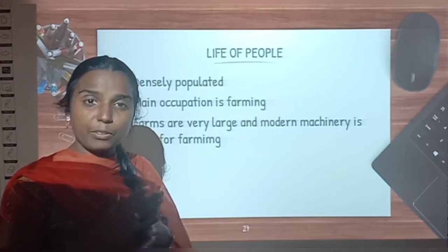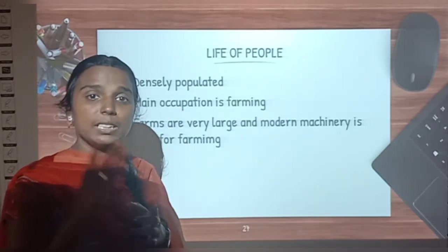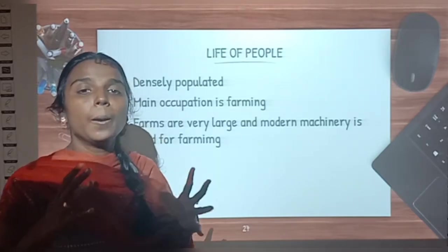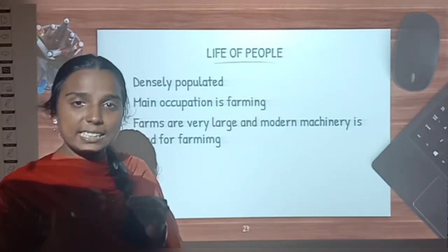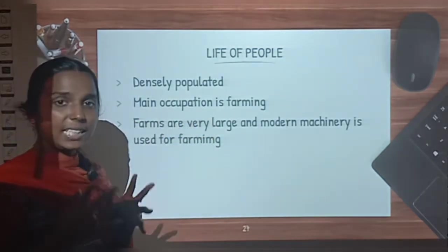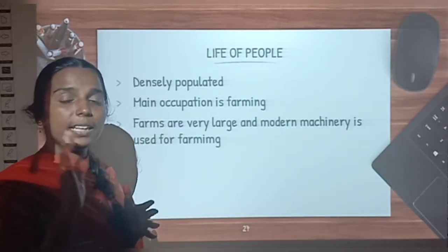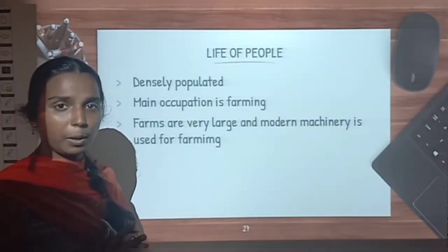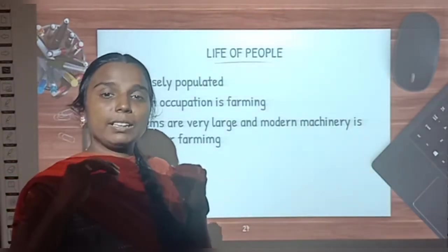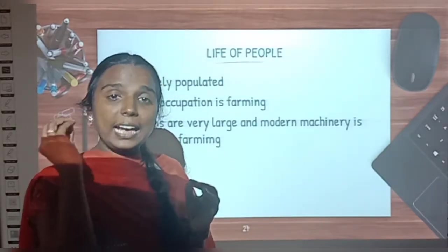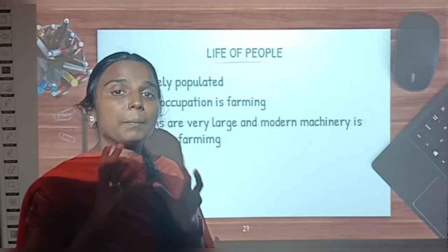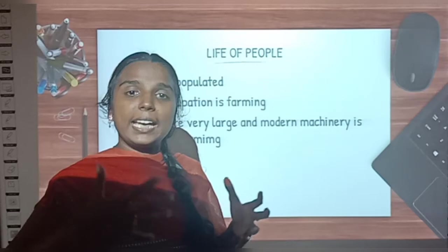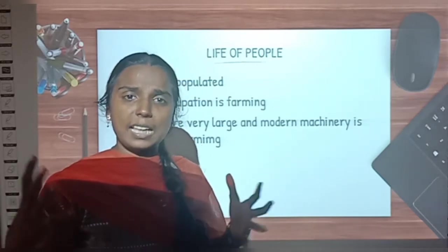Nowadays the grasslands have been destroyed for agriculture — we learned about this in our previous class. Most of the grasslands have been destroyed for agriculture, so people started living there, and it is densely populated. Their main occupation is farming; people are mostly dependent on farming. Farms are very large and modern machinery is used for farming. Using modern machines gives very good results and they will produce large crops.